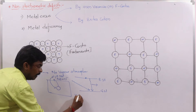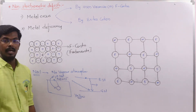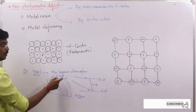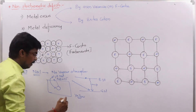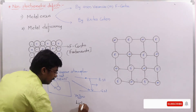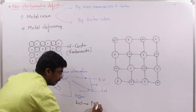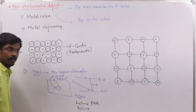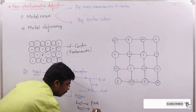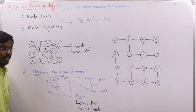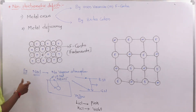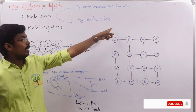When you heat NaCl crystal in sodium vapor atmosphere, due to the presence of this electron it gives a yellow color. Similarly, lithium chloride gives a pink color, and potassium chloride with excess potassium gives a violet color. This is the metal excess defect by anion vacancy.